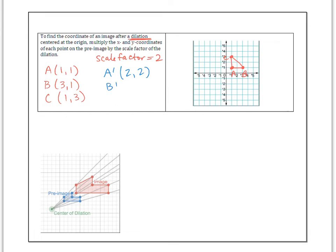So our new A prime, we take 1 and 1 and we multiply by 2 and we get (2,2). Our new B prime is going to be (6,2). Our new C prime is going to be (2,6). So we just took every single coordinate, every x, every y, multiply by the scale factor, and then plot our new points.